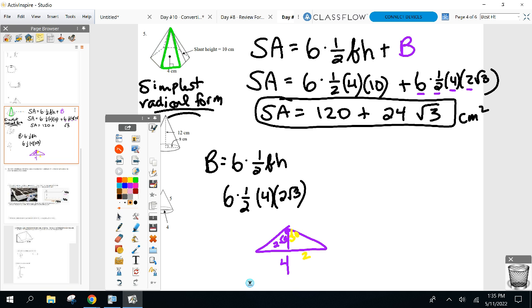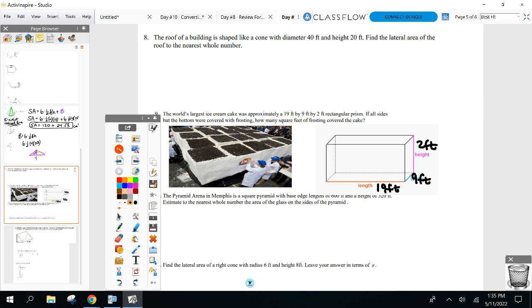So yes, you do need your 30-60-90, 45-45 rules. Sine cosine tangent cannot be used if it's simplest radical form. Anything else? Last comment - I'm not doing this problem with you but please go to number nine.